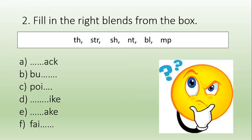Let's move on to number two. Take your small exercise book — the one you write your exercises in. I expect you to fill in the right blends from the box. In the box I have provided you with the blends: sh, str, sh, nt, bl, mp. You need to fill in the right blend in the space provided. I will read the full words and you fill in the right blends.